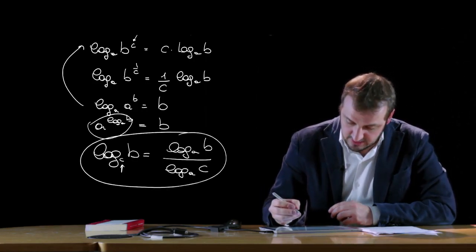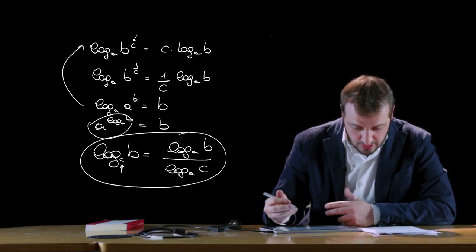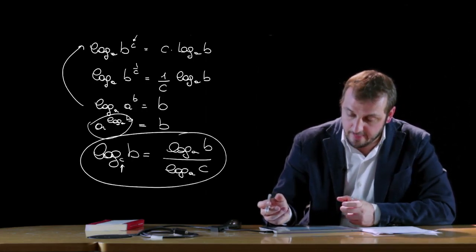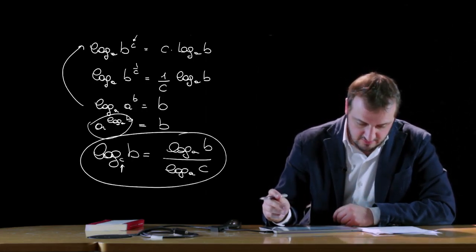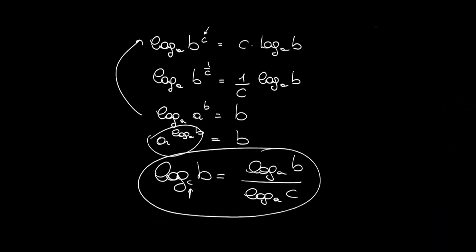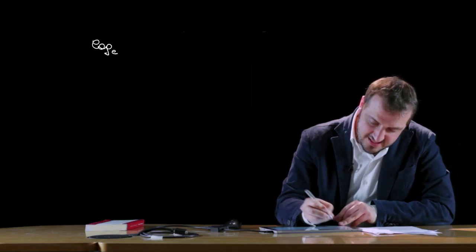L'ultima proprietà citata è quella del cambiamento di base: il logaritmo in base c di b può essere scritto come log_a(b) diviso log_a(c). Questa legge del cambiamento di base è molto utile in espressioni, equazioni o disequazioni in cui si ha la necessità di modificare il valore della base.